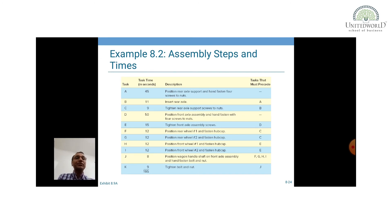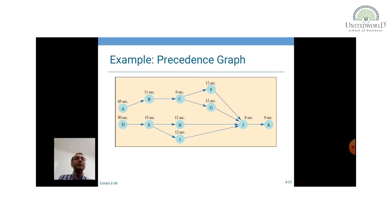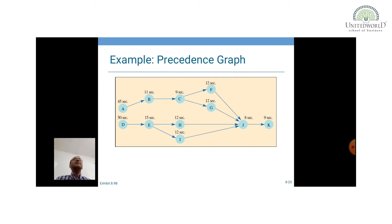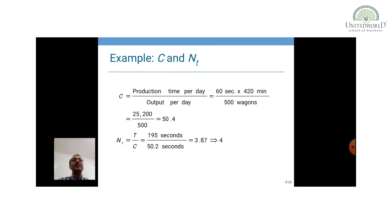On the basis of this data, first you form a theoretical precedence graph. The graph shows that activity B can be carried out only after completion of A. The above timing shows the time taken by each activity. Now, step two is to find the cycle time: production time per day. Given a 7-hour shift, that is 420 minutes, producing 500 units, the cycle time for each workstation is 50.4 seconds.